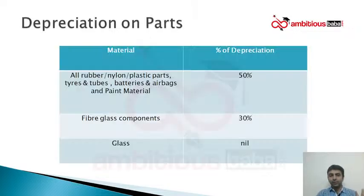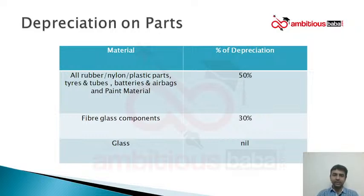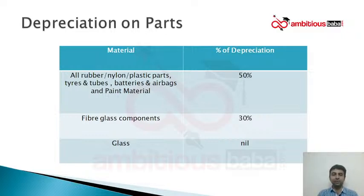We are revisiting the depreciation on parts table because it will be very useful for today's questions. All rubber, nylon, plastic parts, side tube, batteries, airbags and paint materials — straight flat 50% depreciation. If a part costs 1,000 rupees, deduct 50%, and we will pay 500 rupees. As simple as that.